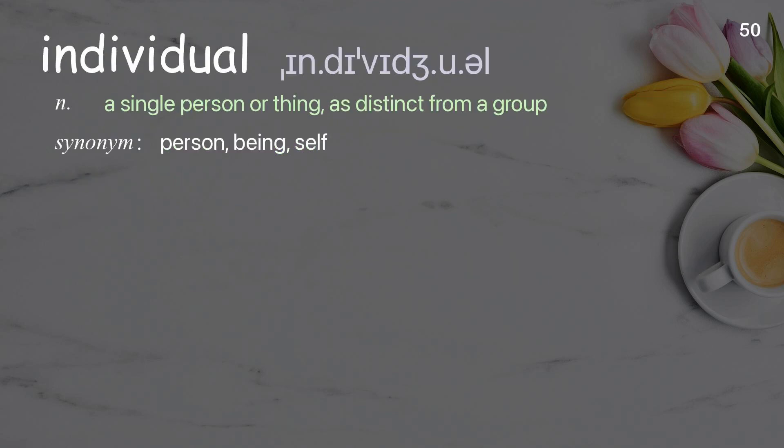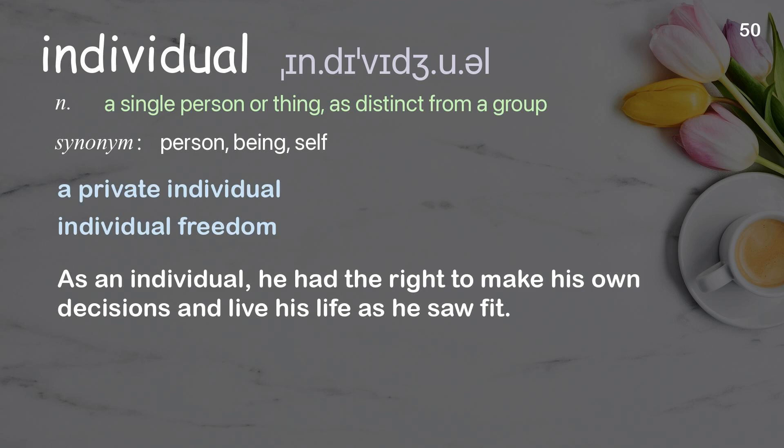Individual: A single person or thing as distinct from a group. Examples: A private individual. Individual freedom. As an individual, he had the right to make his own decisions and live his life as he saw fit.